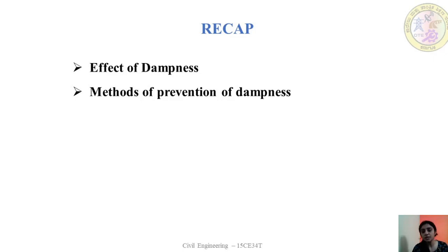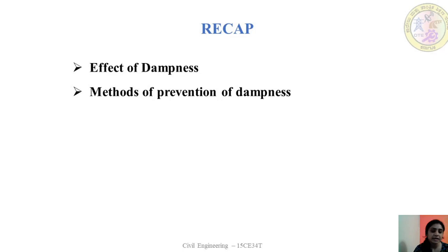We also discussed methods of prevention of dampness. The first method was using a damp proof course — a continuous layer of impervious material provided between the source of dampness and the structure exposed to dampness. That impervious layer does not allow moisture to pass through it. The damp proof course can be made of materials like bitumen, mastic asphalt, bituminous felt, polythene sheet, metal sheet, etc. — all flexible materials. The damp proof course can be horizontal or vertical.